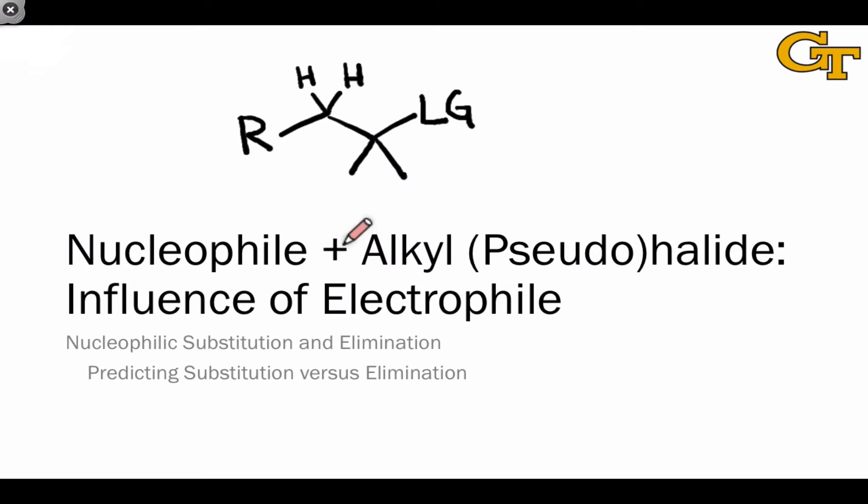The electrophile is the species that receives electrons in a substitution or elimination reaction. And the primary determinant from the electrophile's perspective of whether substitution or elimination occurs is based on steric hindrance at the electrophilic carbon.